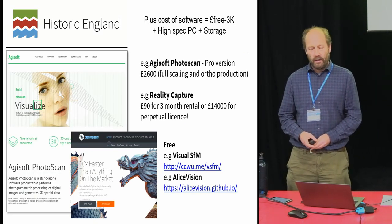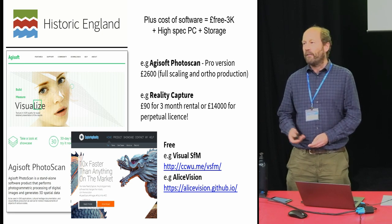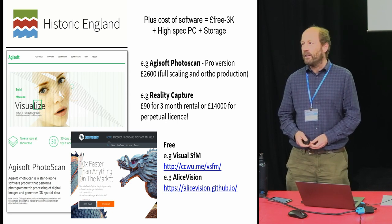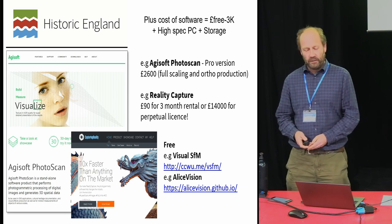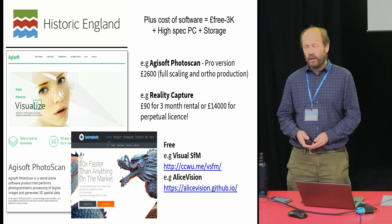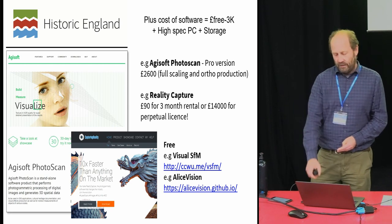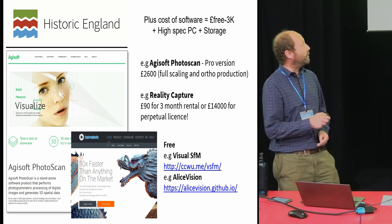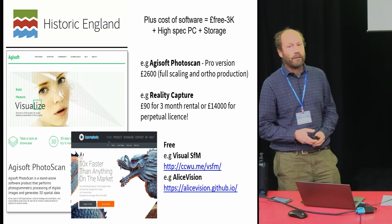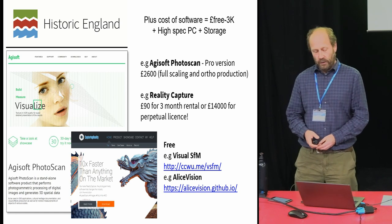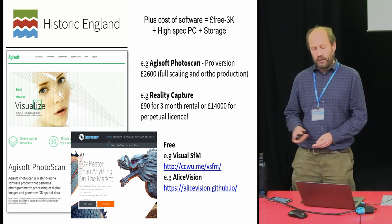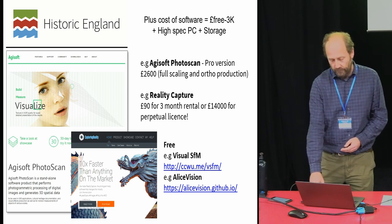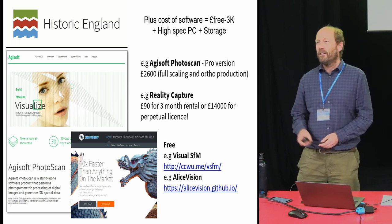The cost of software is another consideration. If you want scaled results or auto photos, you generally have to pay for the pro version. One notable example is Capturing Reality, which is 90 pounds for a three-month rental or 14,000 pounds for a perpetual license. There are also free options: VisualSFM relies on command lines, while Alice Vision has a proper GUI. But you still need a high-spec PC for efficient work, and you must consider storage and archive — it's quite easy to generate gigabytes of photography on just one project.